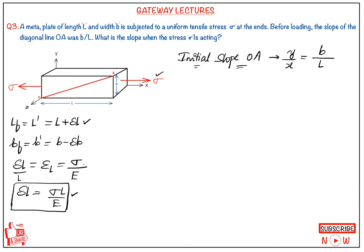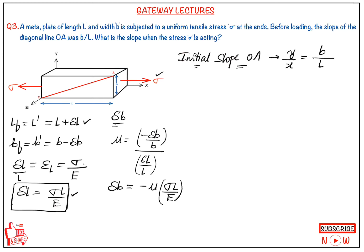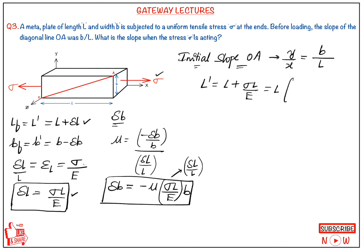We also need delta B. Using Poisson's ratio: minus delta B by B divided by longitudinal strain equals mu, so delta B = minus mu × sigma L upon E × B. E and mu are metal properties — they need not be separately assumed; they apply by default. From that, L dash = L + sigma L upon E = L × (1 + sigma upon E).